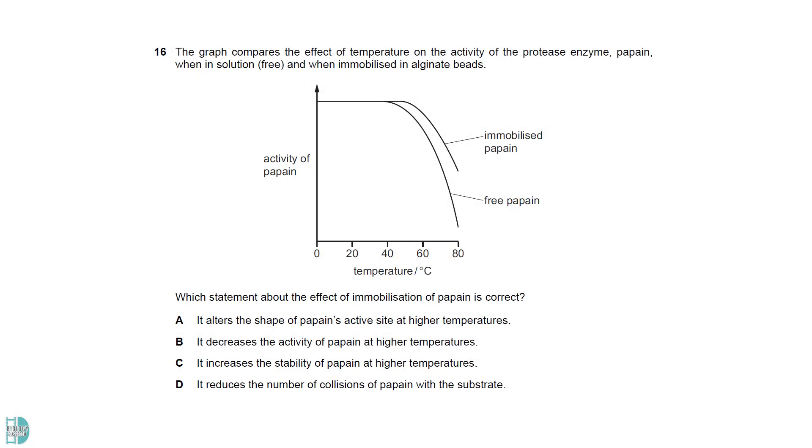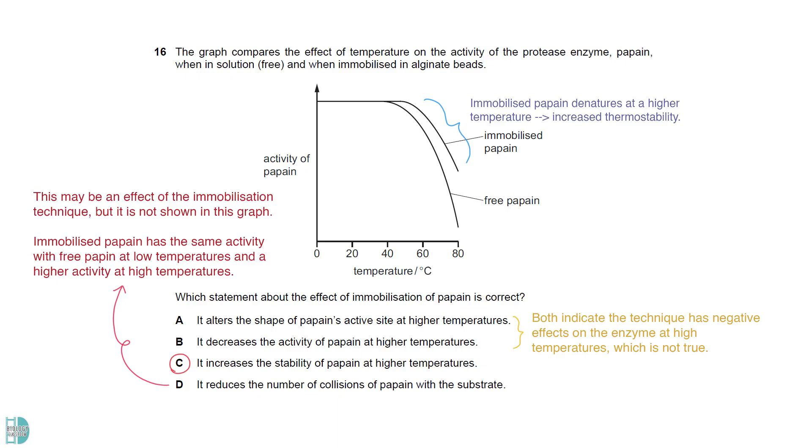The graph shows that the immobilized papain denatures at a higher temperature. This means immobilization has increased the thermostability of the enzyme. So, C is the correct answer. A and B indicate the technique has negative effects on the enzyme at high temperatures. These are not true based on the graph. D may be an effect of the immobilization technique. But it is not shown in the graph as immobilized papain has the same activity with the free enzyme at low temperatures, and a higher activity at high temperatures.